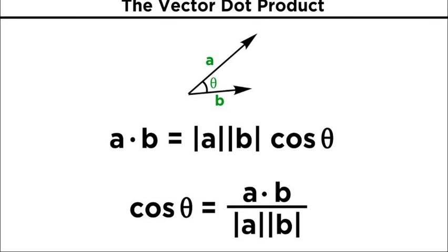Welcome back. In the previous video we covered vector addition, and you saw how a vector can be added either by the triangular law, parallelogram law, or head-to-tail pattern. In this class we start another vector operation: the product of vectors. We have two types of product — dot product and cross product.